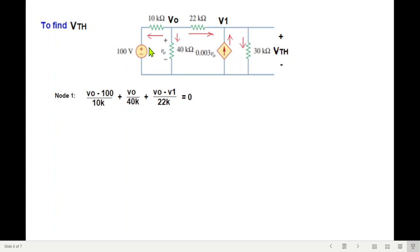So at node 1, I am calling this as node 1 and this node 2. At node 1, this current is V0 minus 100 volt divided by 10k. Then this one is V0 divided by 40k. And this current is V0 minus V1 divided by 22k. Now multiplying by the LCM which is 440k and simplifying this, this is our first equation.